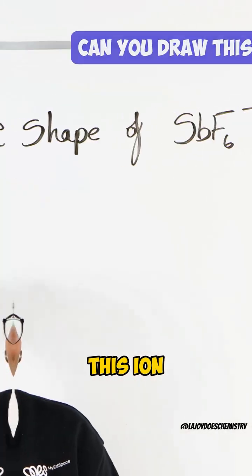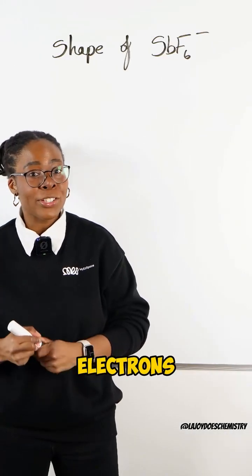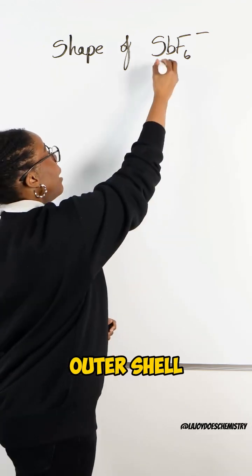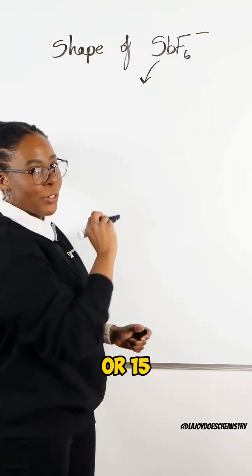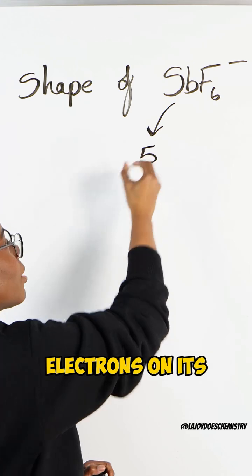Can you draw this ion? Let's start with the number of electrons on Antimony's outer shell. Antimony is in group 5 or 15, so we'll just say 5 electrons on its outer shell.